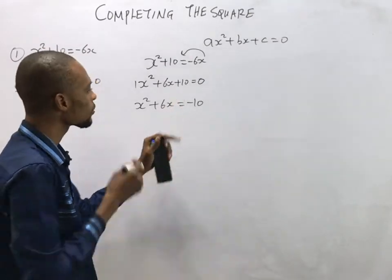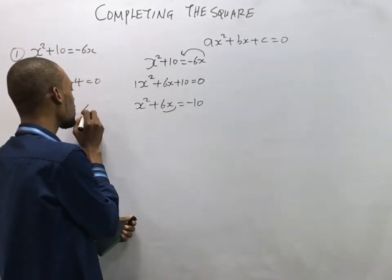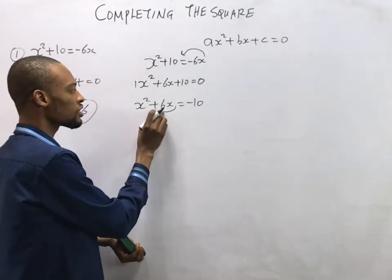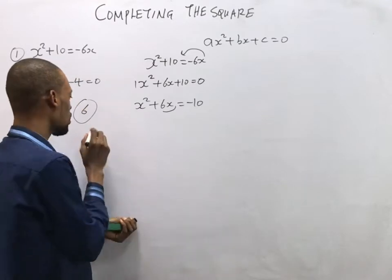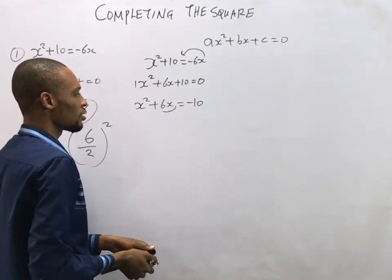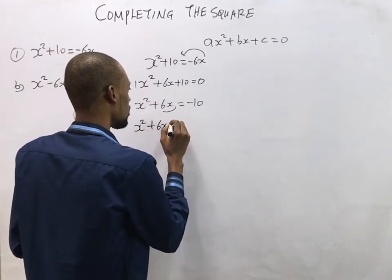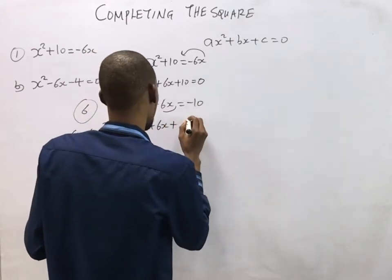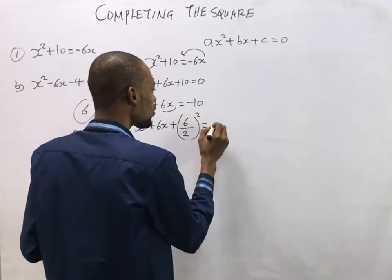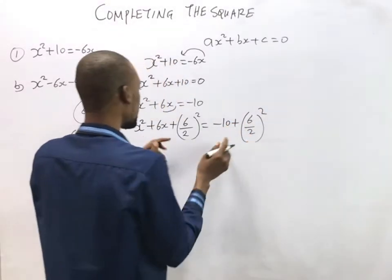The next step: the coefficient of s is 6. We halve it and square it — that is, divide by 2 and then square the result — and add this value to both sides. So we write: s² + 6s + (6/2)² = -10 + (6/2)².